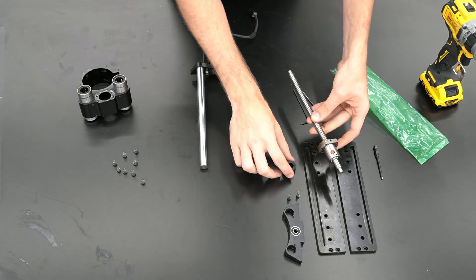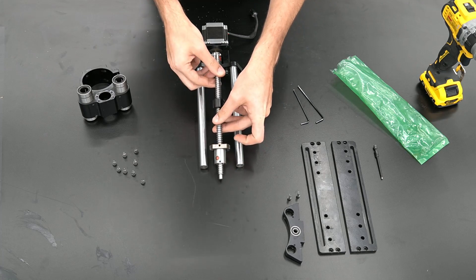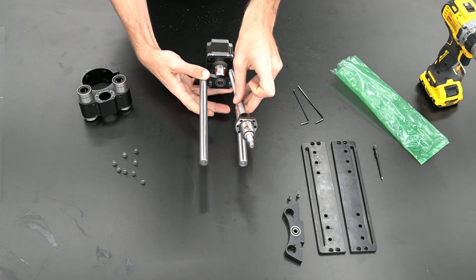We can now take our new ball screw with ball nut. We will slide the black coupler over the ball screw, but we're not going to tighten that down just yet.